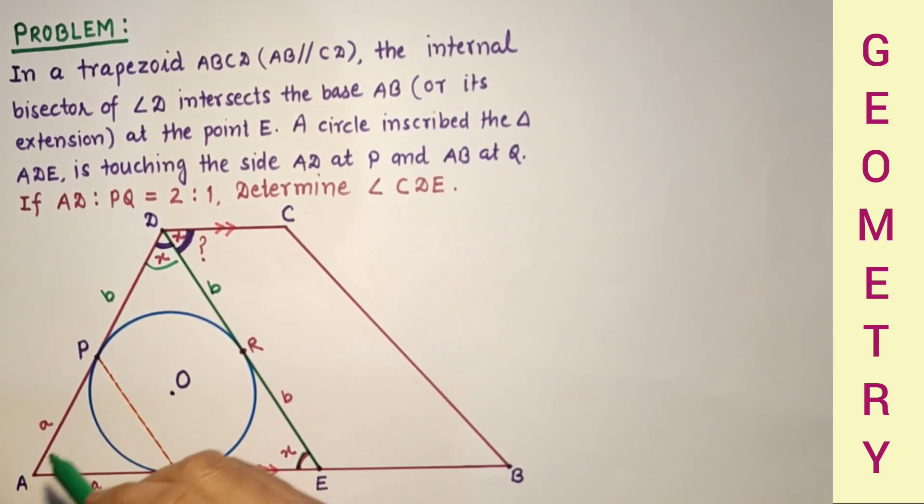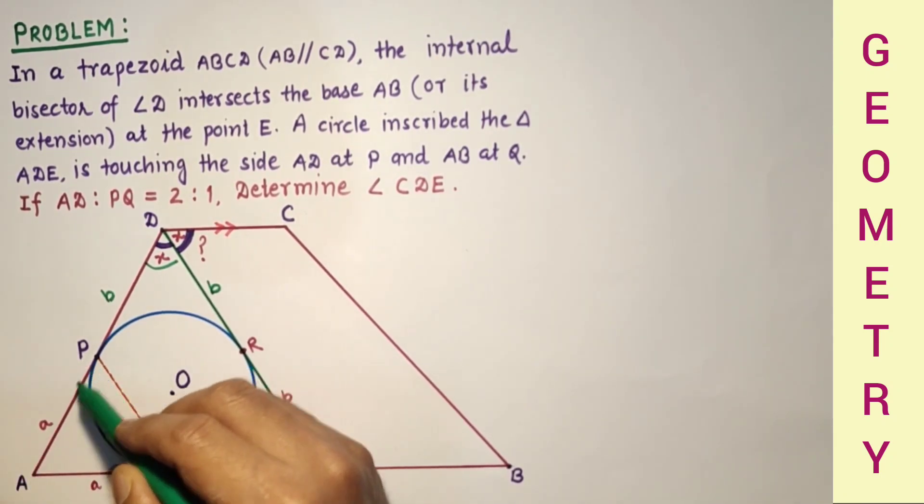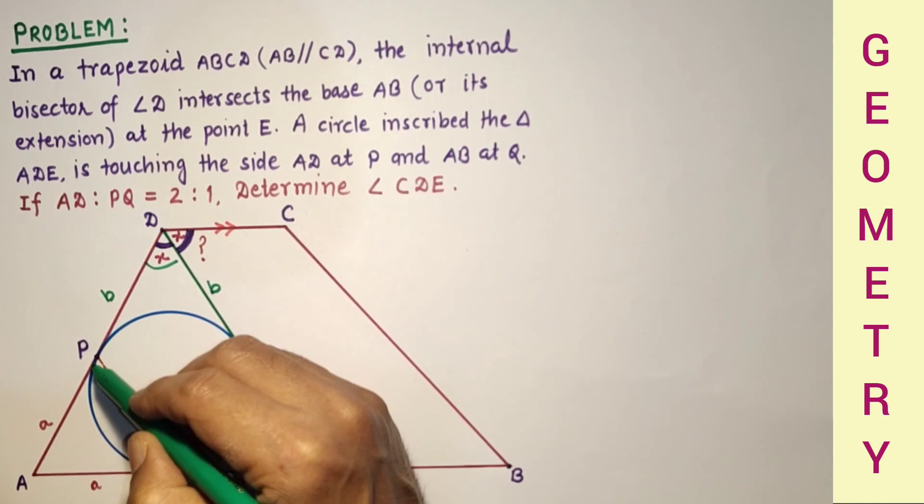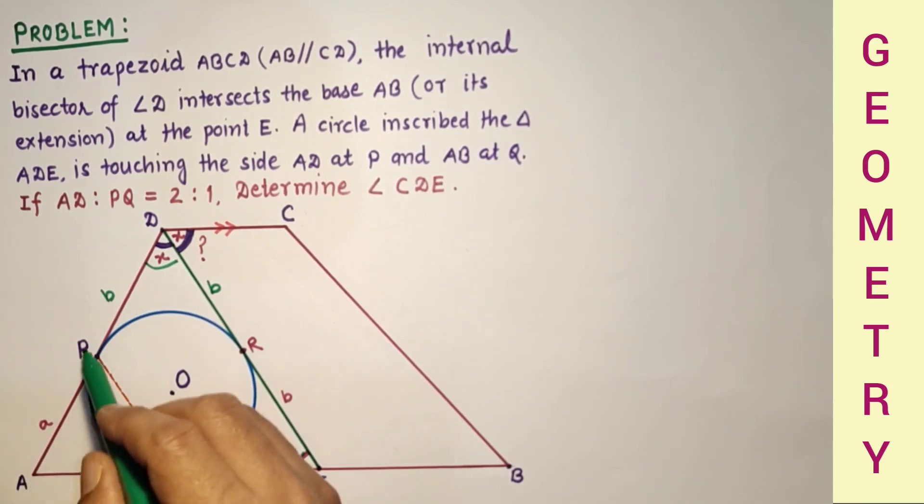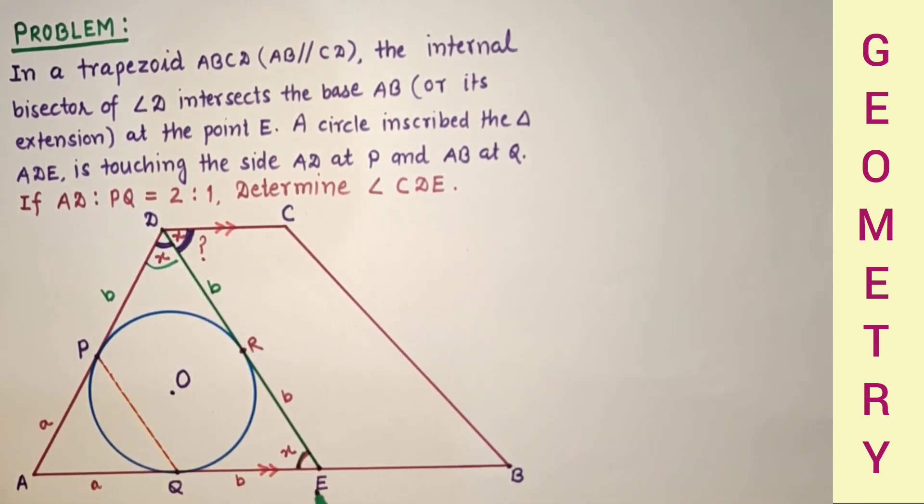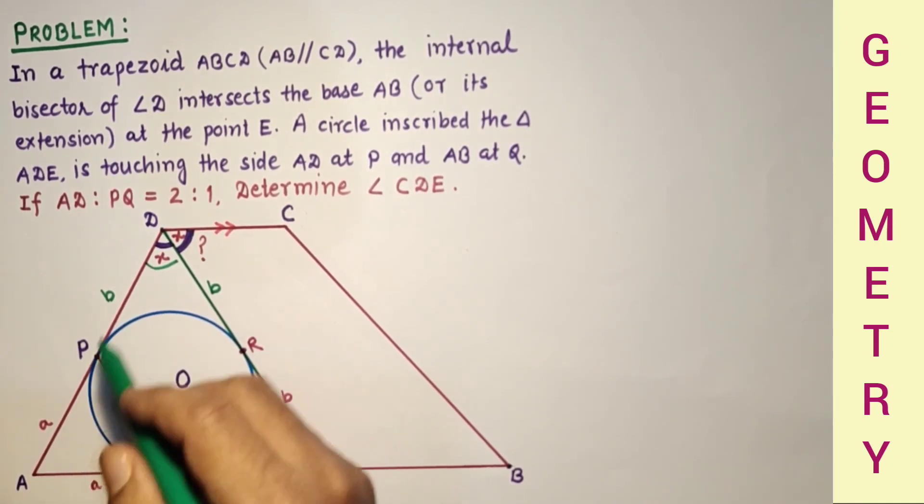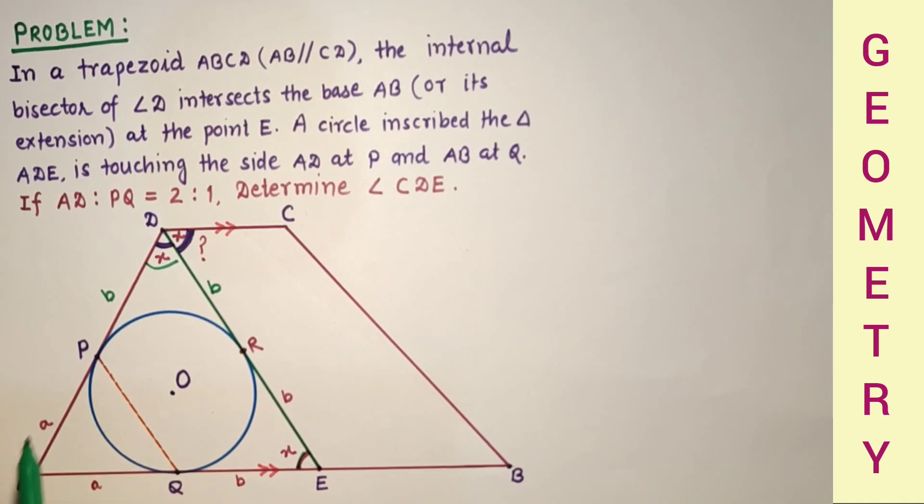Now, since the ratio AP is to PD, which is A is to B, and the ratio AQ is to QE, which is A is to B again, these two ratios A is to B and A is to B are equal. So by converse of basic proportionality theorem, PQ is parallel to DE. This basic proportionality theorem is known as Thales theorem.